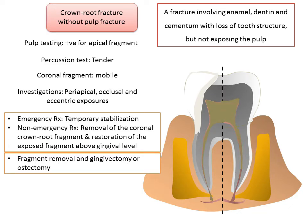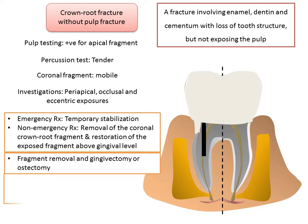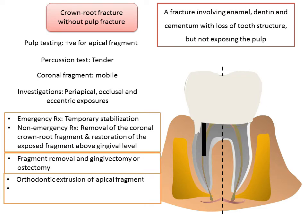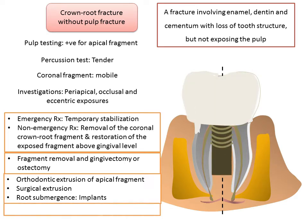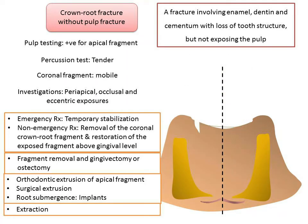Further management options for crown-root fracture without pulp exposure include orthodontic extrusion of the apical fragment, surgical extrusion with repositioning of the root to a more coronal position, root submergence with implant planning, and extraction — which is inevitable in cases with severe apical extension.